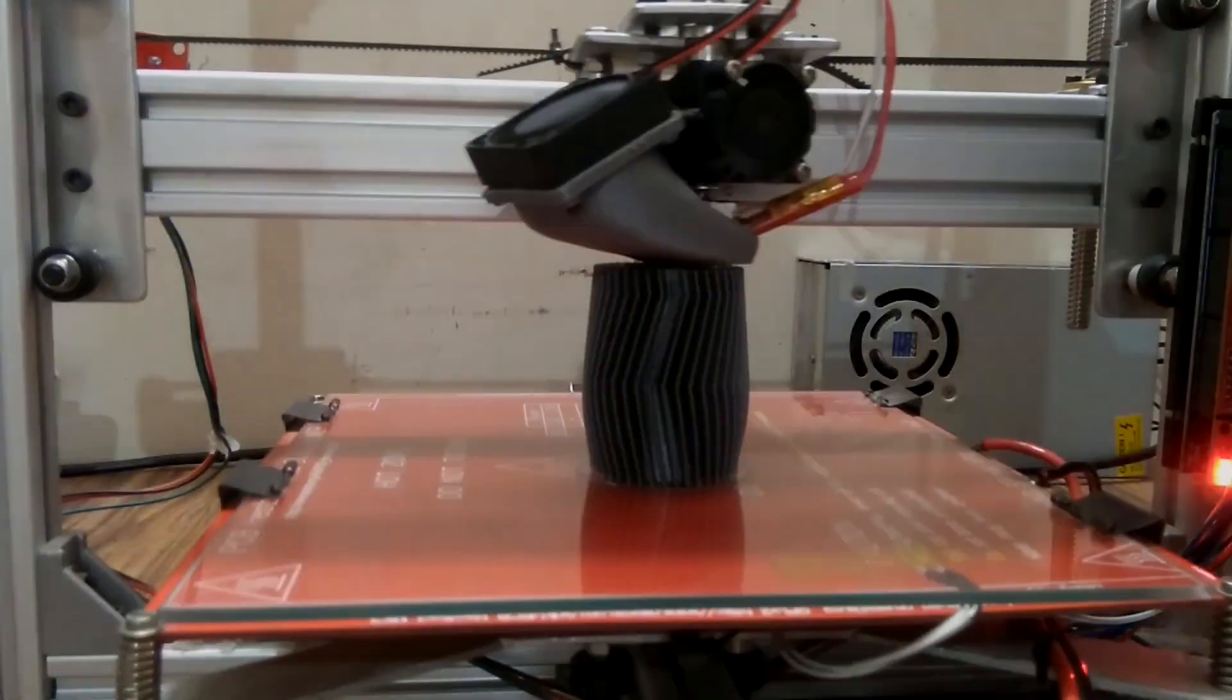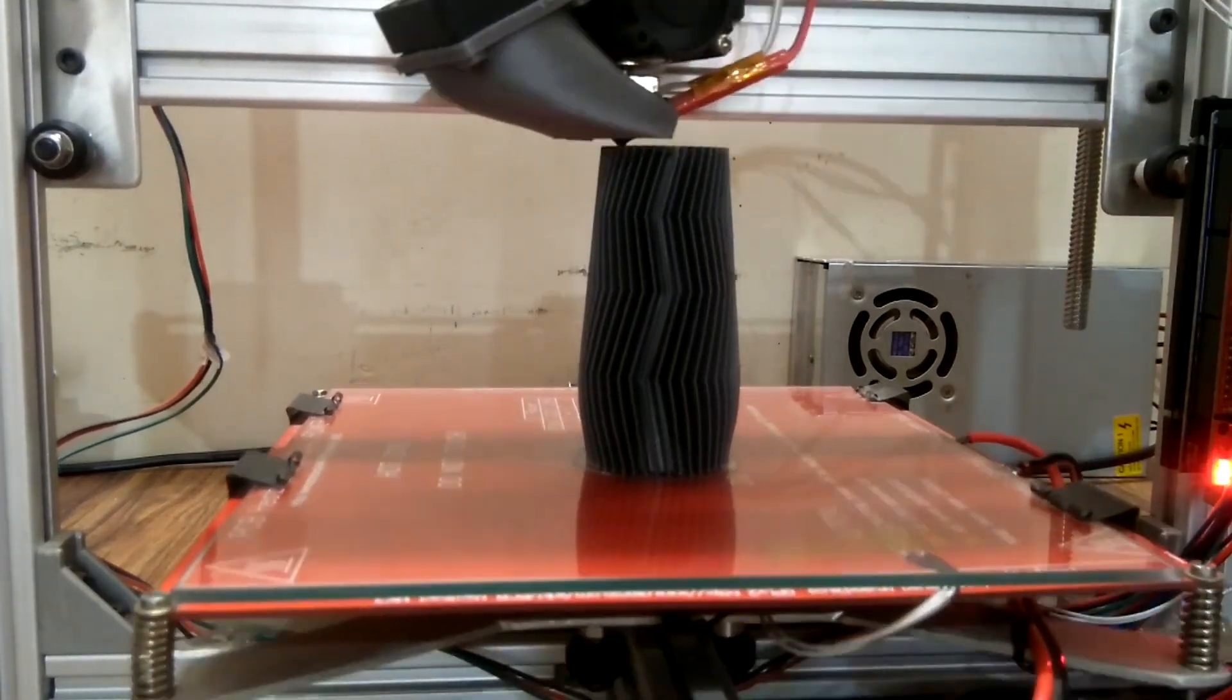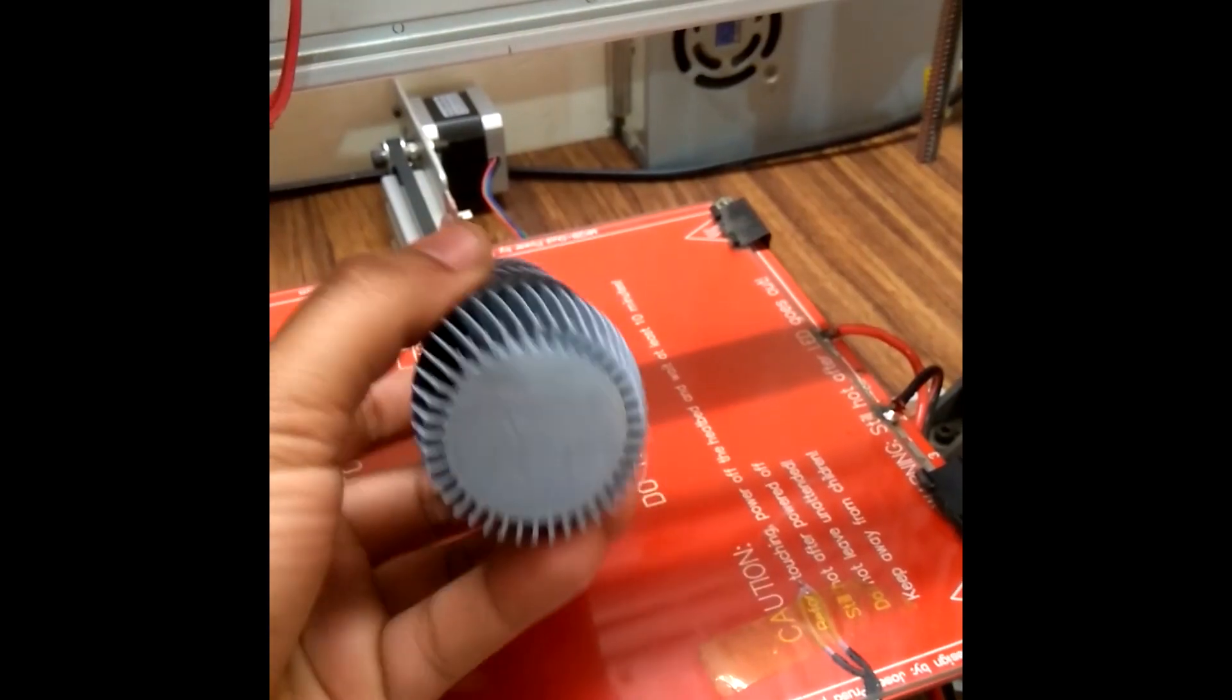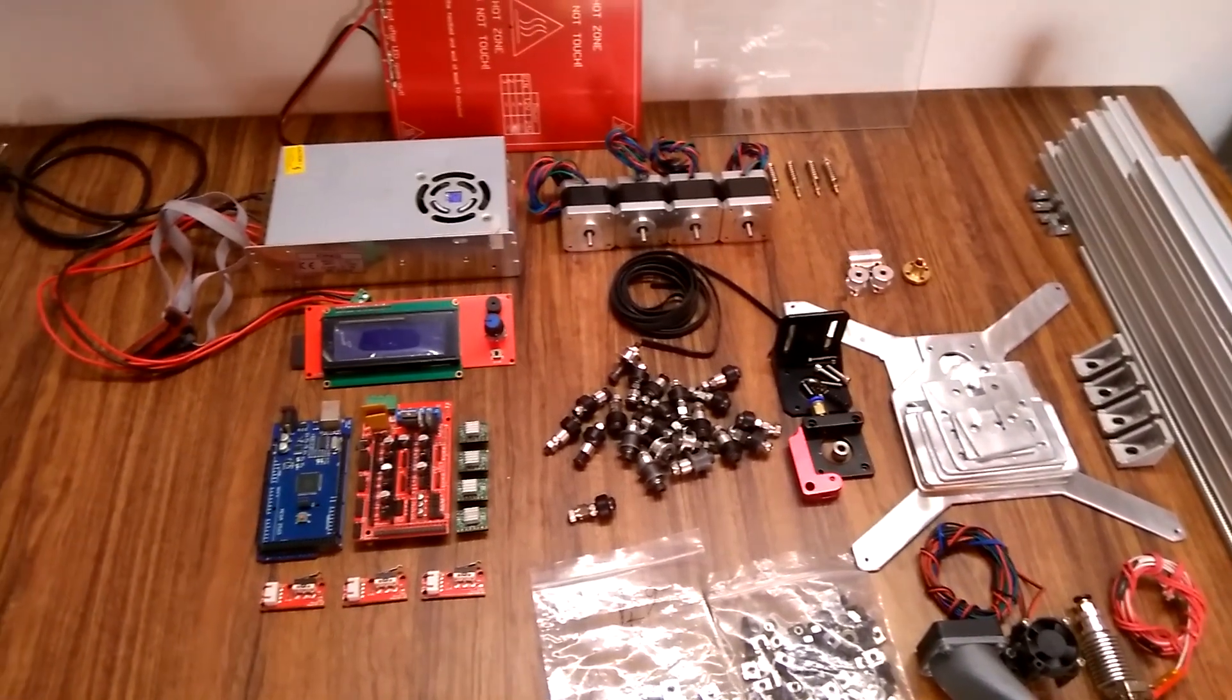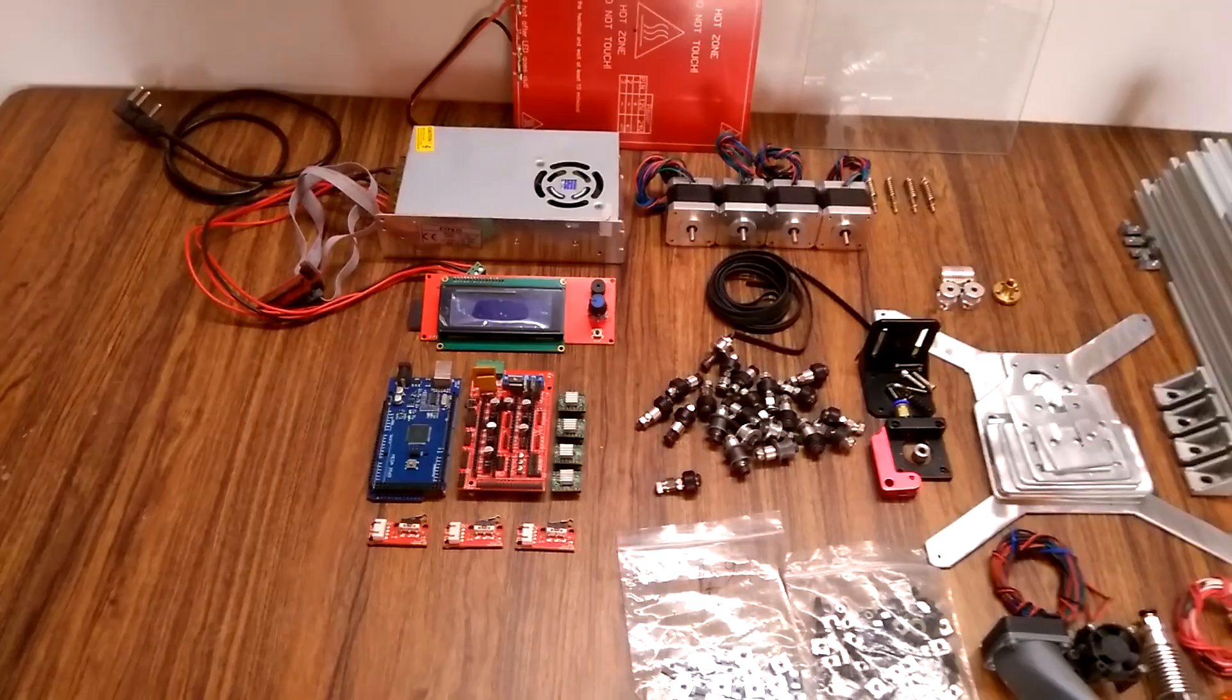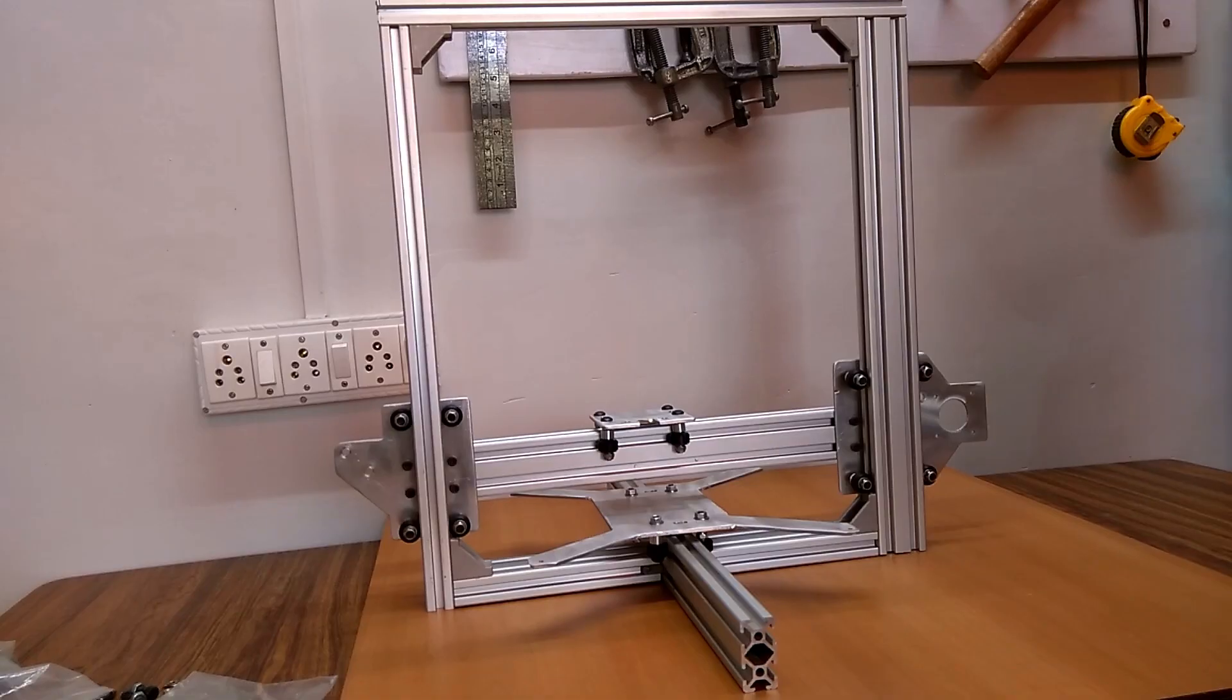In a previous video, I had shown an intro of my DIY 3D printer. In this 3 part video series, I will show you how I made the 3D printer from scratch using parts easily available on eBay. I will share the parts list, designs and other files at the end of the series in the description below.